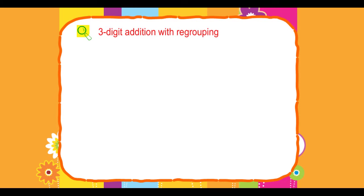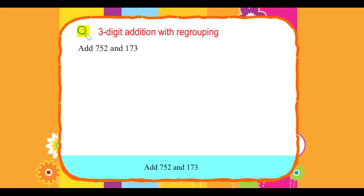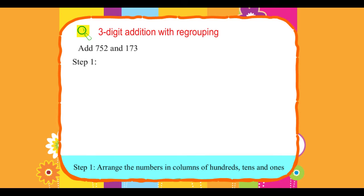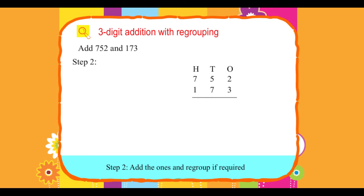3-Digit Addition with Regrouping: Add 752 and 173. Step 1: Arrange the numbers in columns of hundreds, tens, and ones.